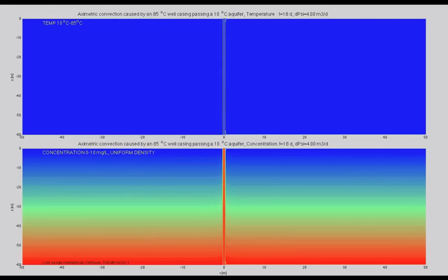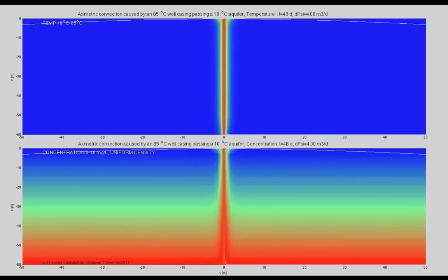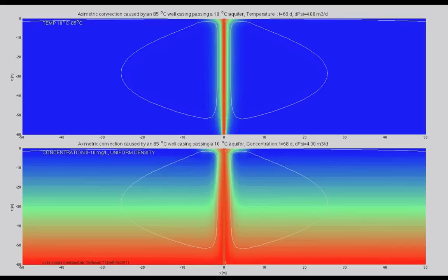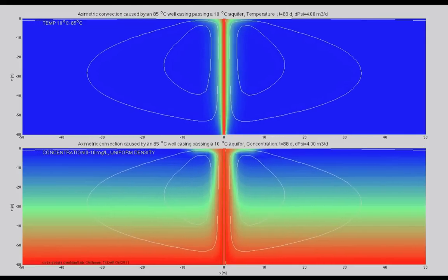This video shows an axisymmetrical vertical cross-section of a rising pipe or casing of a well pumping a hot fluid or gas from greater depth. The casing passes a shallow aquifer on its way to ground surface.